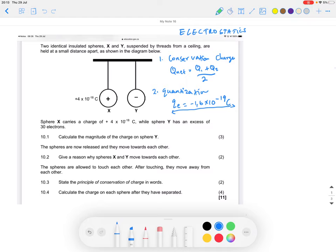The formula for the quantization of charge is represented by q equals n × qe, where q represents the amount of charge and n represents the number of electrons. qe, as I already explained, is this value that's going to be given to you.